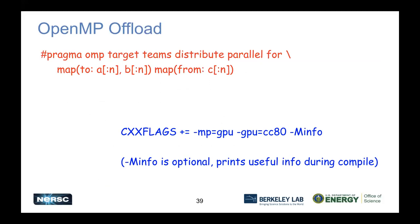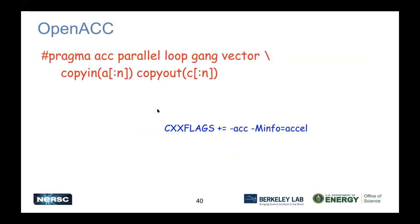Maybe you're not using CUDA - there are a couple of offload options: OpenMP and OpenACC. Different applications may use one of these. If it's OpenMP, you'll have directives like #pragma omp target teams with map directives. OpenACC is similar but slightly higher level - you'll have directives like #pragma acc parallel loop. OpenACC is in a way a higher level of abstraction.